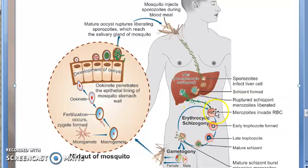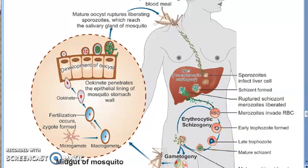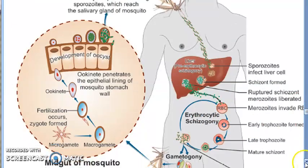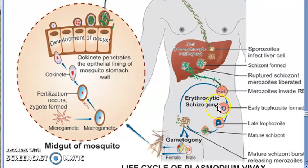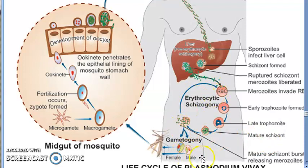The merozoites released from the liver invade RBCs, which have a receptor that helps the merozoites enter. Inside the RBC you can see a ring structure — this is the early trophozoite. It progresses to a late trophozoite, then a mature schizont full of merozoites, which ruptures and releases more merozoites to invade new RBCs. Some merozoites instead become male and female gametocytes, waiting in man for a mosquito to pick them up.